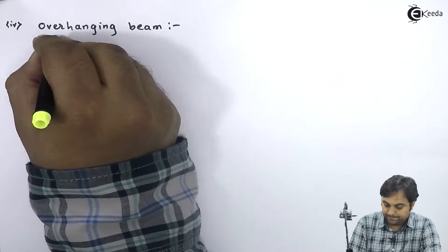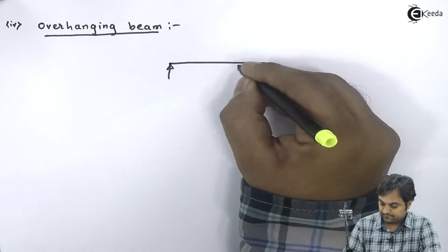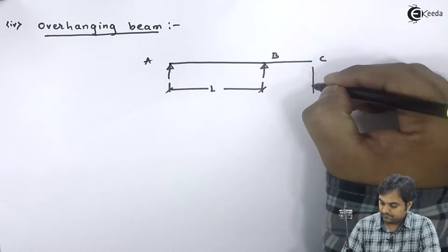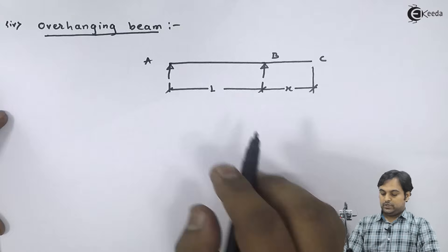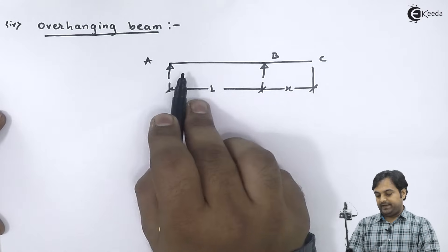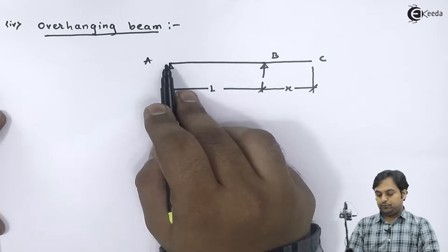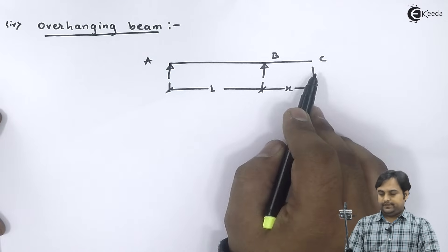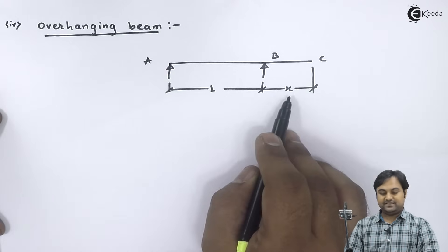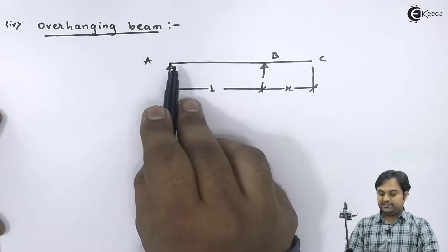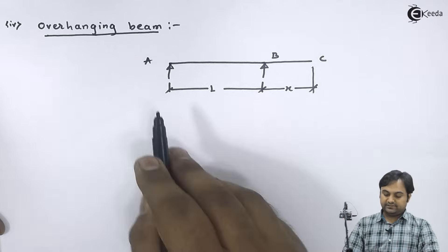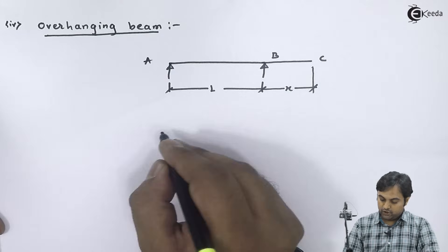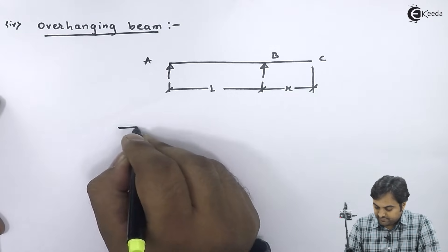Next is the overhanging beam. If we have a beam which is supported at point A and point B, the BC portion of the beam is hanging. The total length of the beam is L plus X, so only the L portion is supported and X portion is hanging. That kind of beam is called an overhanging beam. In an overhanging beam, it can hang either from one side, or you can even have an overhanging beam hanging from both sides.